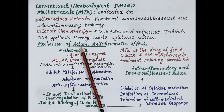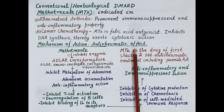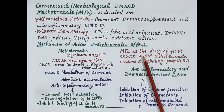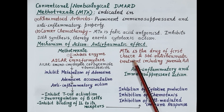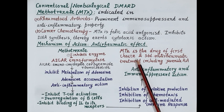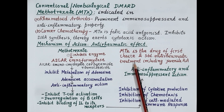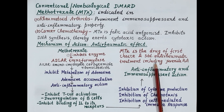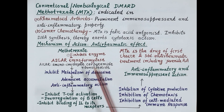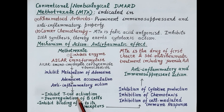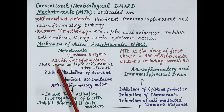Let's first understand the mechanism of action of methotrexate in rheumatoid arthritis — that is, its anti-rheumatic effect. Methotrexate is the drug of first choice in rheumatoid arthritis and is the standard anti-rheumatic treatment, including in juvenile rheumatoid arthritis. This schematic diagram explains its mechanism of action.